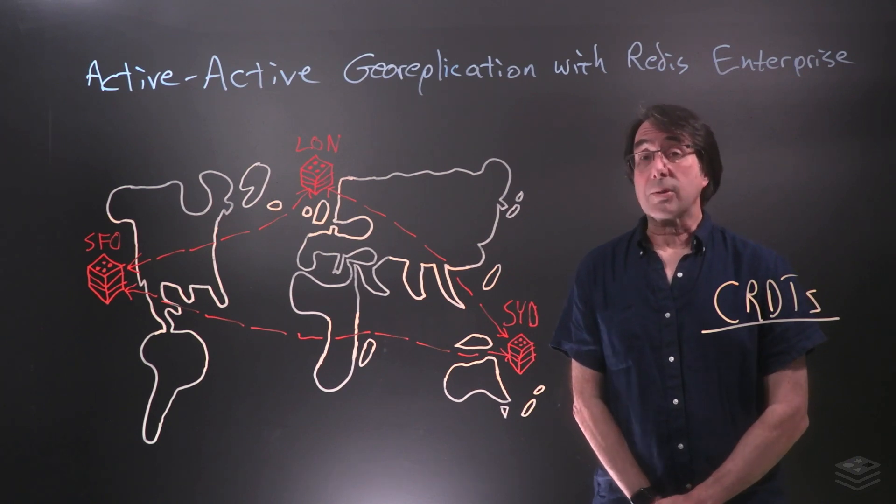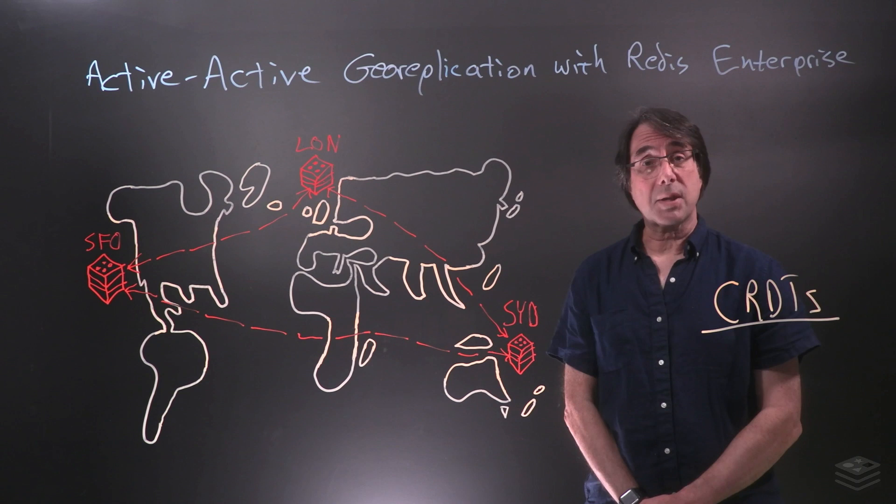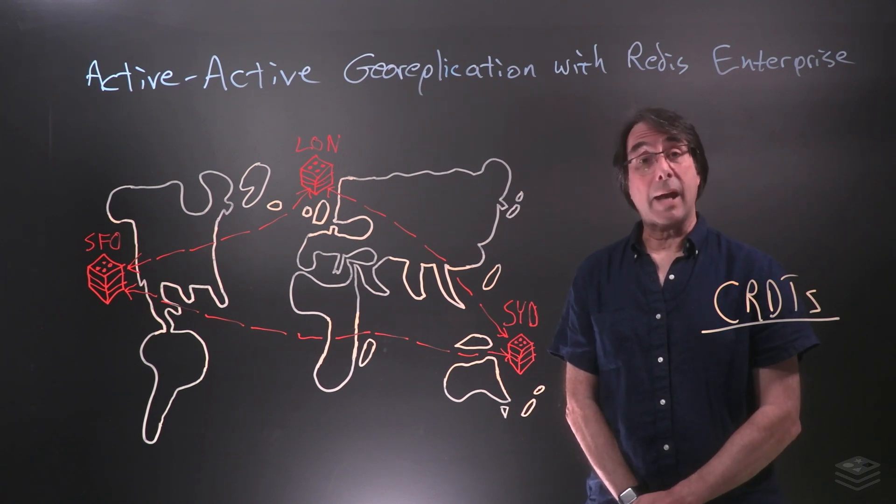With our replicas defined, any change, for example, made in San Francisco is automatically sent to London and Sydney.